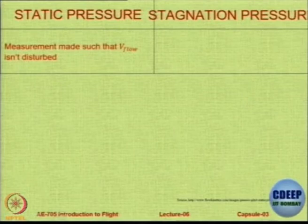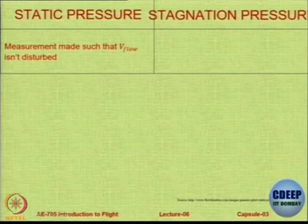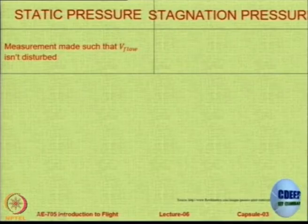Measurements made such that the flow is not disturbed are called static pressure measurements, and in static pressure measurement we have to be passive. In both cases one should not disturb the flow field as far as possible to get a true reading. In static pressure measurement we are not interested in changing the parameters of the flow. In stagnation pressure measurement, we want to measure the pressure when you bring the flow to rest, and this bringing of fluid to rest has to be done isentropically.